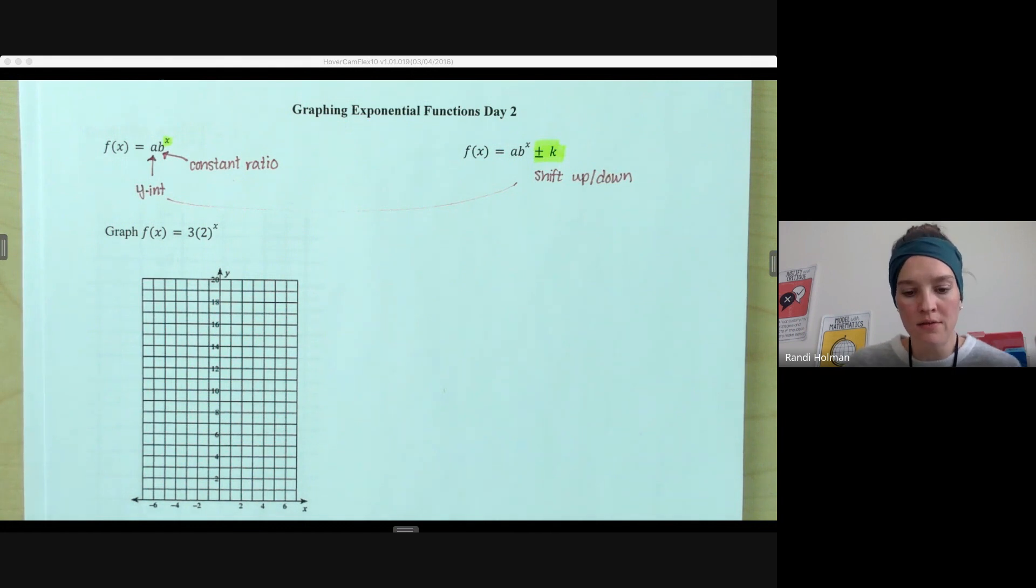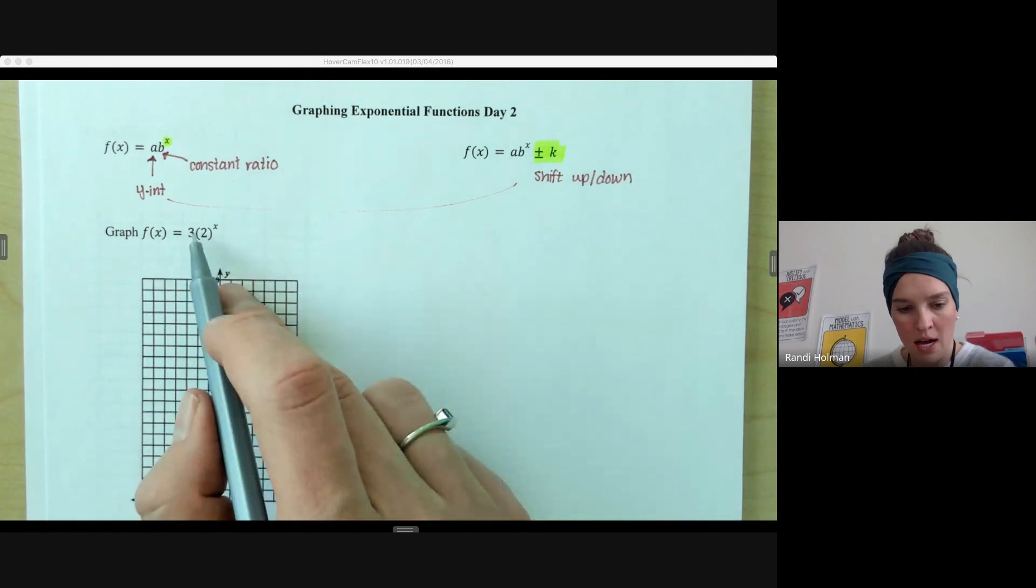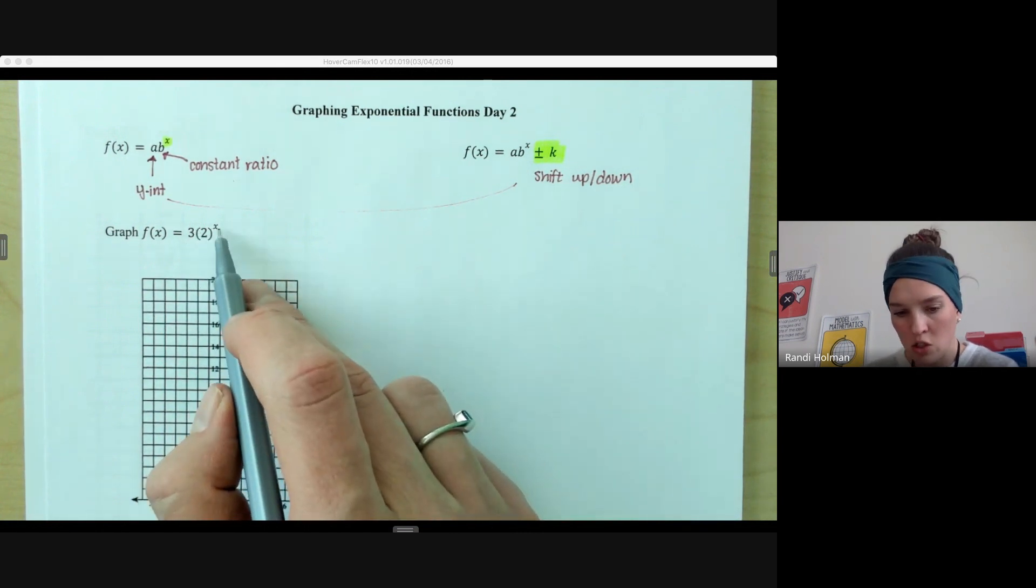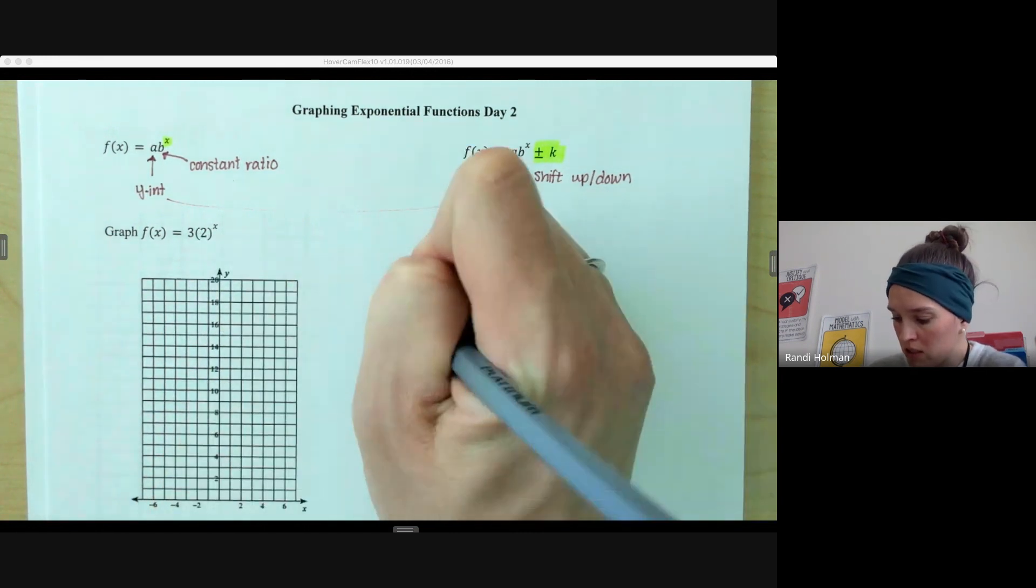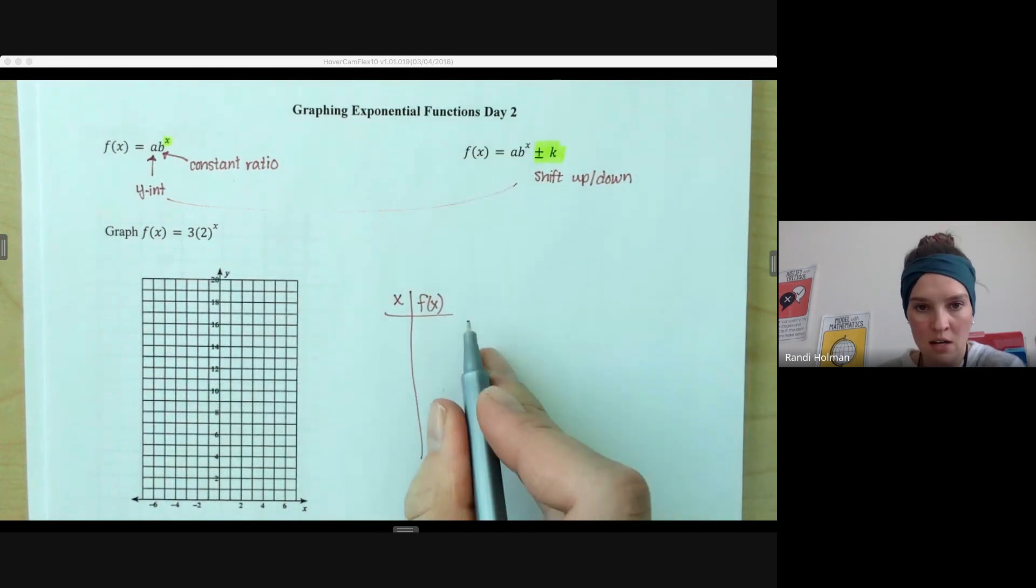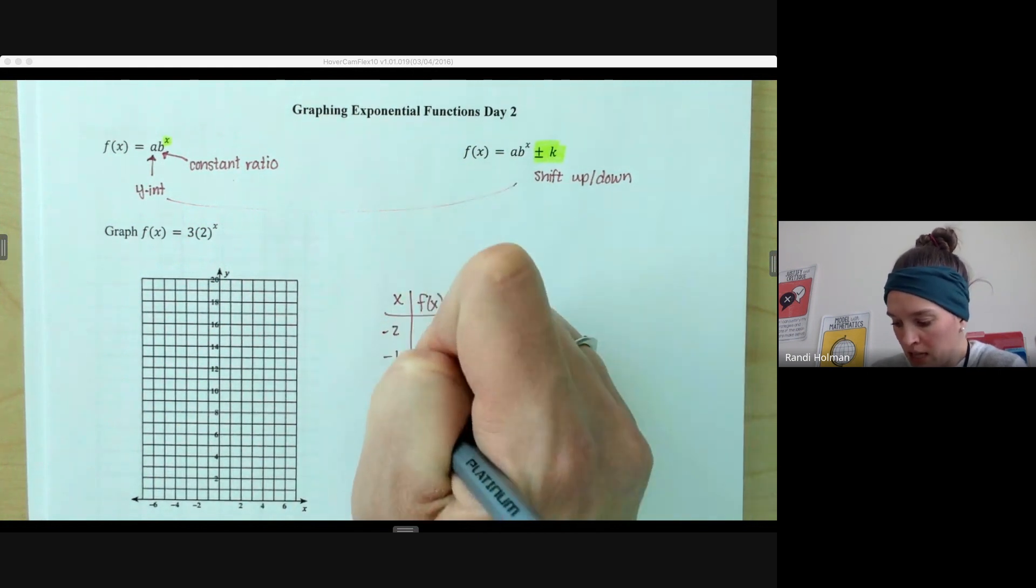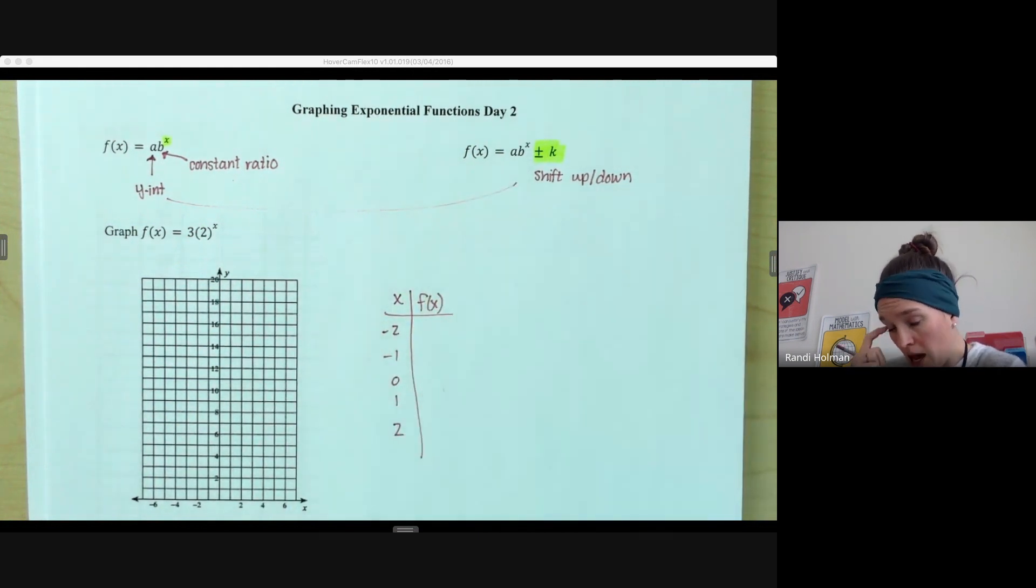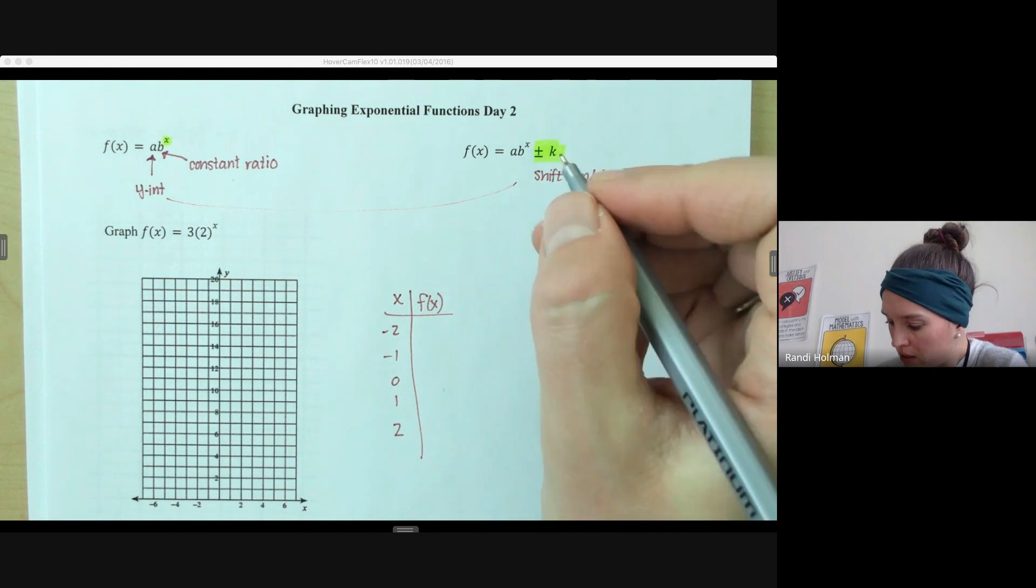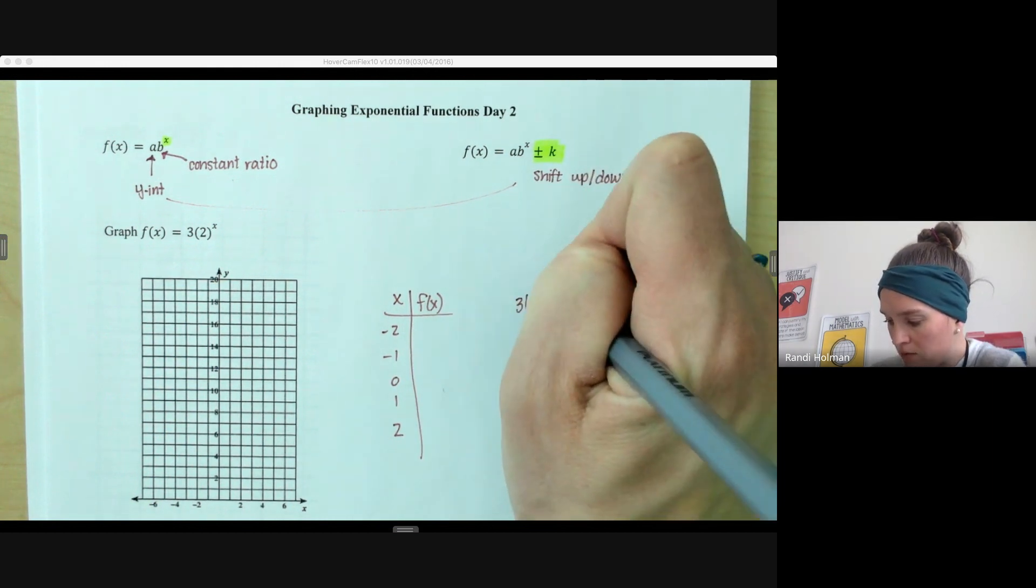All of the ones that we looked at previously had an asymptote at y equals 0, so that asymptote will just move with your graph if you have a k value. So let's start just with our graph of y equals 3 times 2 to the x. So again, we're going to start by making a table of values for our x values and our y values or our function values. So if I plug in some negatives and some positives, we're going to give a decent picture of our graph. Remember, you can always extend that if you need to. So let's start with negative 2.